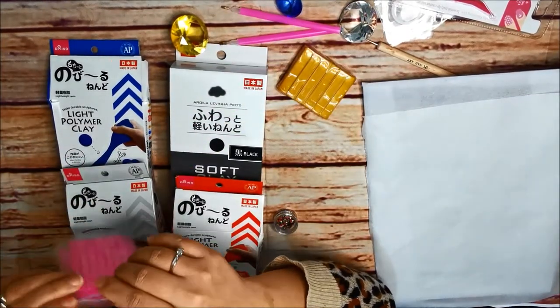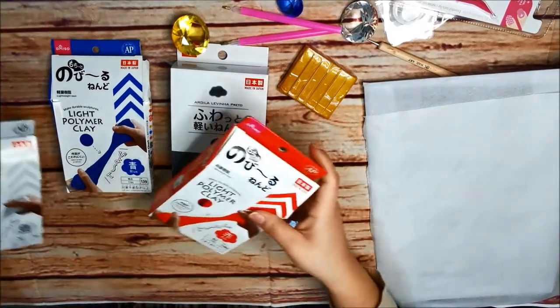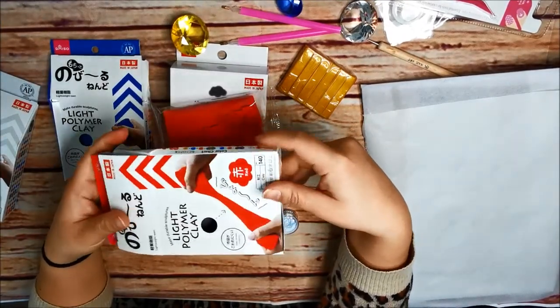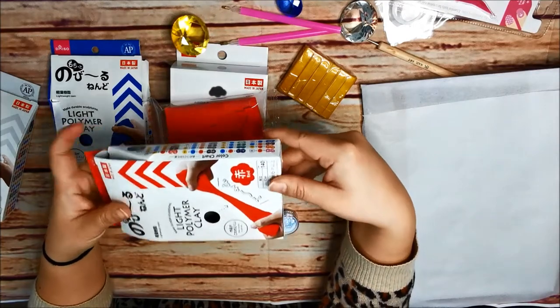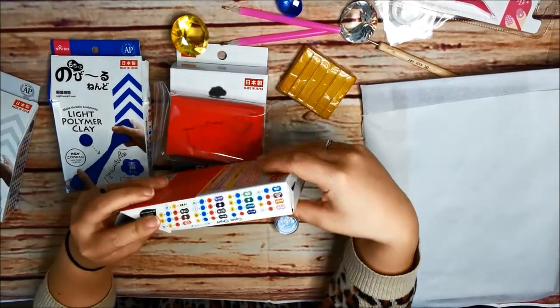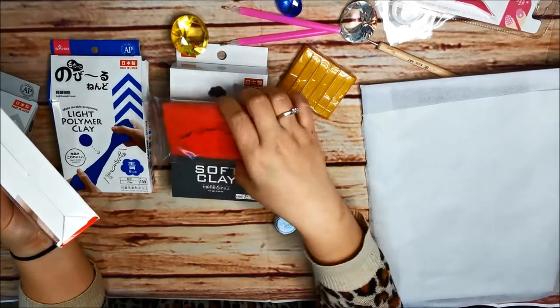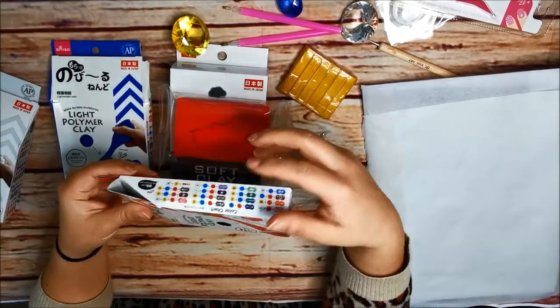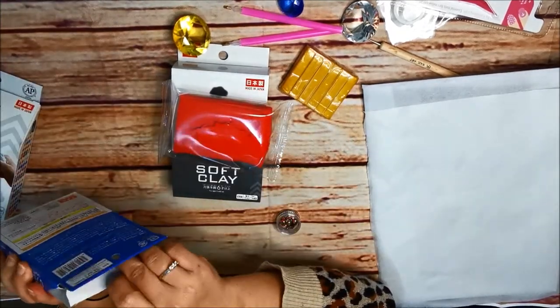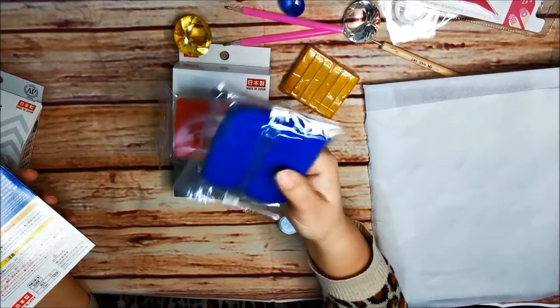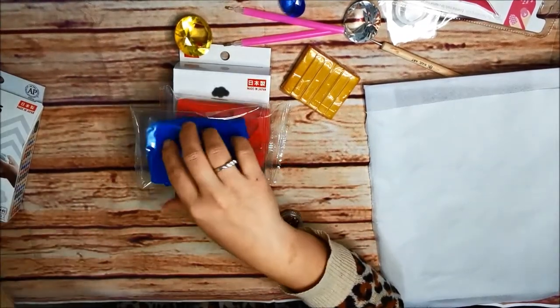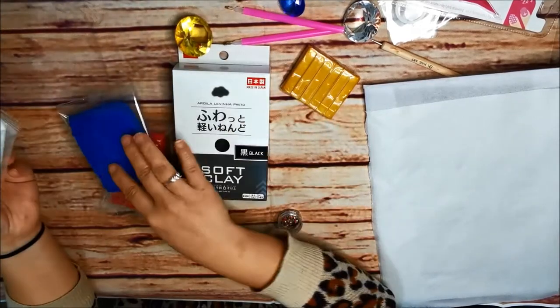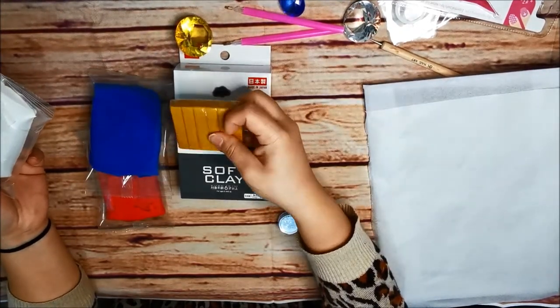Let's take everything out from the packaging. You can see here on the box from the Daiso polymer clay, I only got the basic colors. You could just mix and match the clay to create your own shade of colors. It's actually a huge piece of clay. And it's only $2.80. I actually forgot to buy the yellow one. That's the reason why I grabbed this one from Riot.